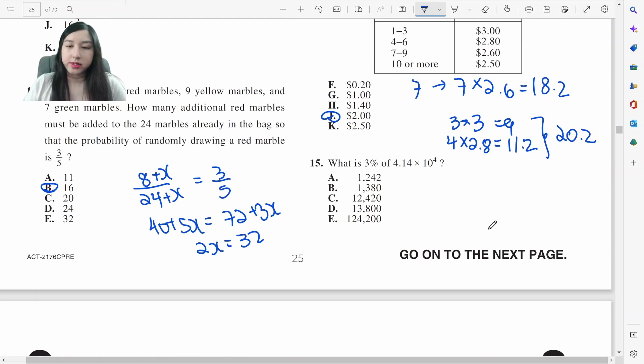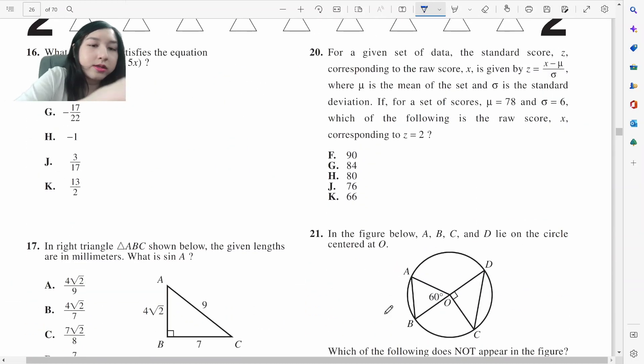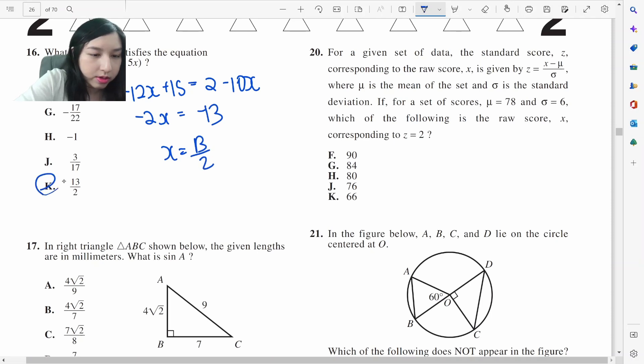3% of this time stat. Basically, we're doing 3 times 414, which is 1,242. A. Distribute. Negative 12x plus 15 equals 2 minus 10x. Negative 2x equals negative 13, x is going to be 13 over 2. Sine A, opposite over adjacent, 7 over 9.